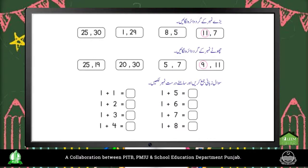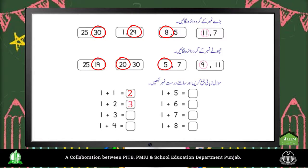Circle the larger number: 11, 28, 29, 30. Circle the smaller number: 9, 25; 20, 19. Solve the oral addition and write the correct answer: 1+1=2, 1+2=3, 1+3=4, 1+4=5, 1+5=6, 1+6=7, 1+7=8, 1+8=9.